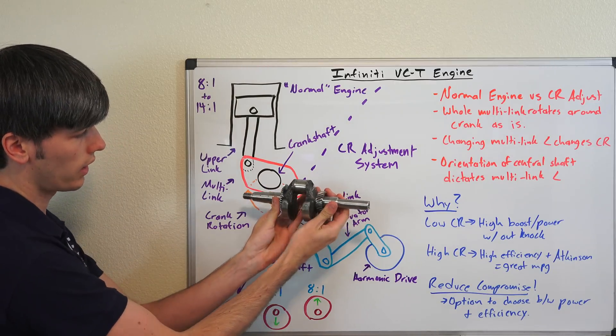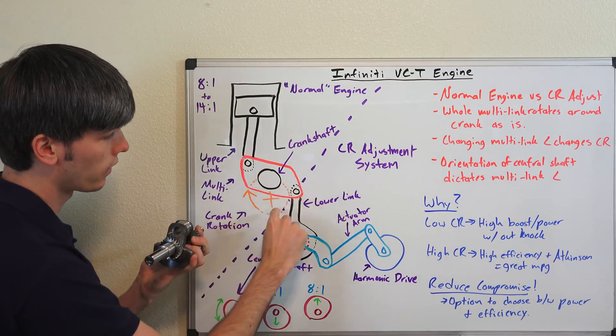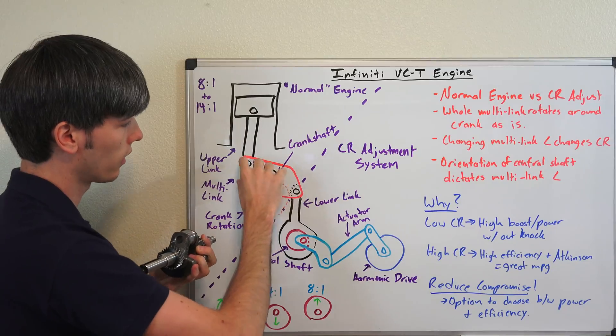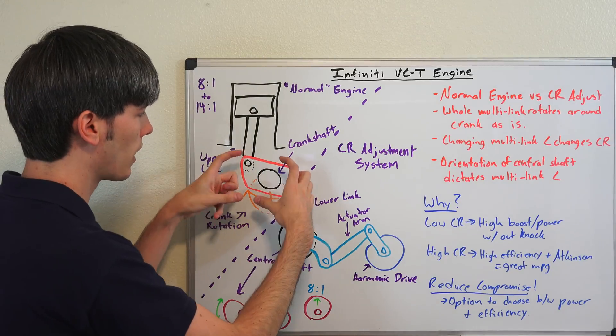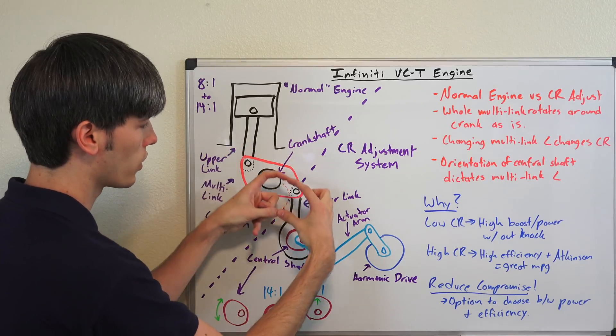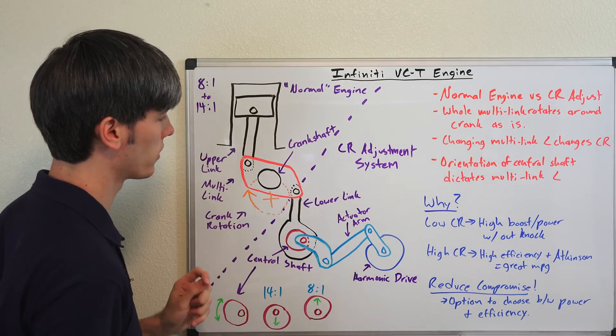Looking at this crankshaft right here, how this would be oriented would be just like that, with the center right here, and then this will rotate around. This piston will come down and up, down and up, and rotate this section. Now the important thing that you need to understand is that this multi-link piece right here, this rectangular piece, maintains this orientation as it goes around the crankshaft. It doesn't rotate, it maintains that orientation.